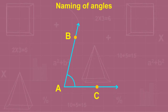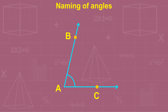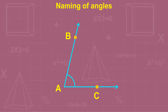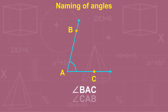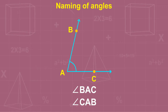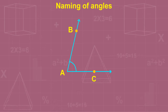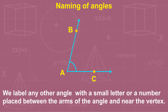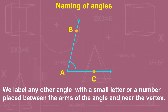In the given figure, the angle has two arms AB and AC with vertex A. We can name this angle as angle BAC or angle CAB. It can also be called angle A. We label any other angle with a small letter or a number placed between the arms of the angle and near the vertex.